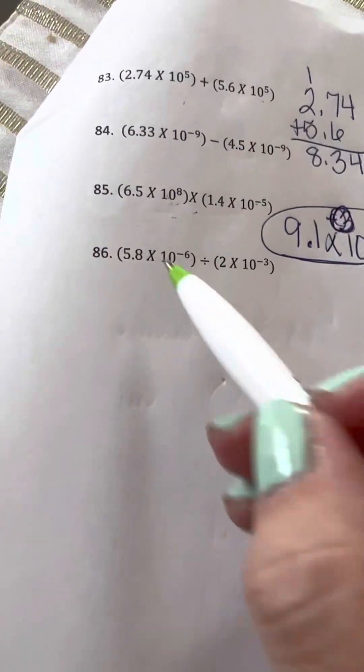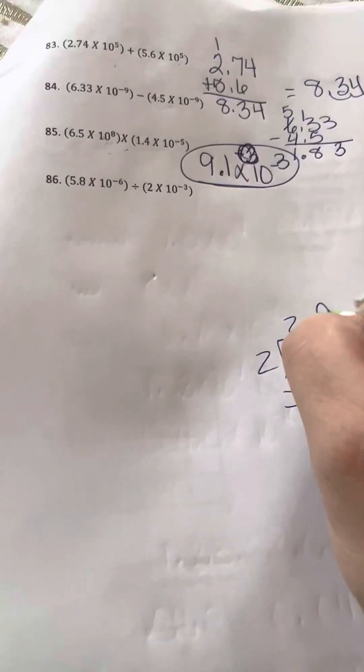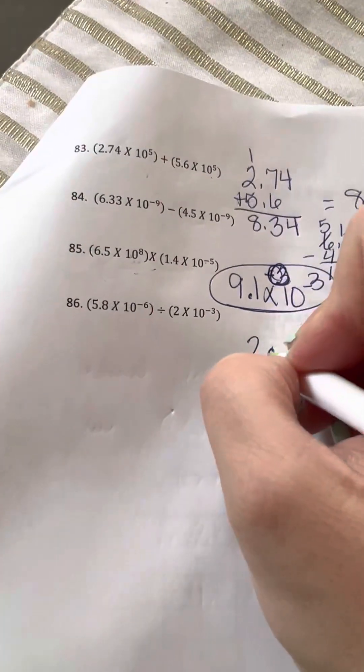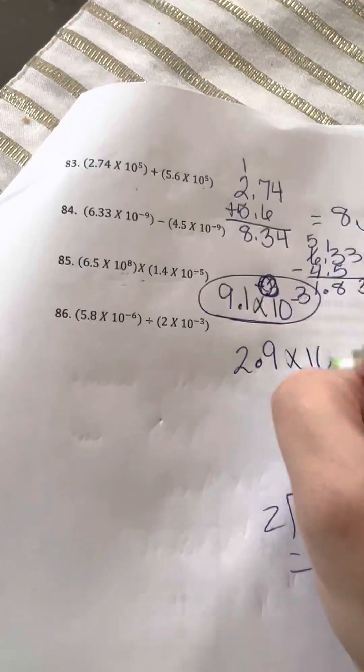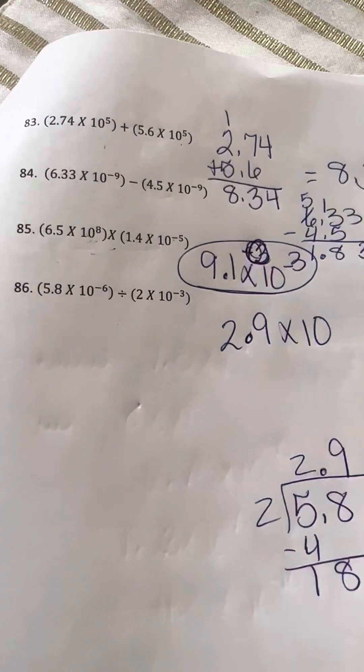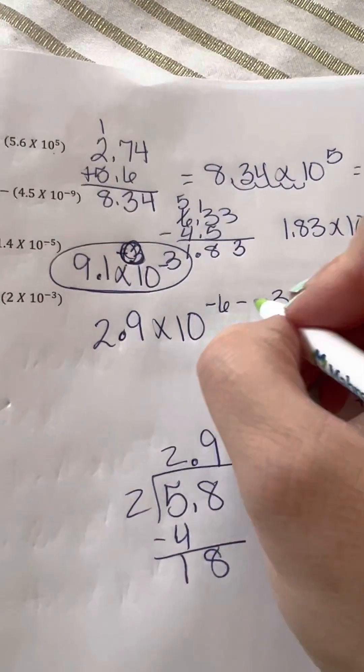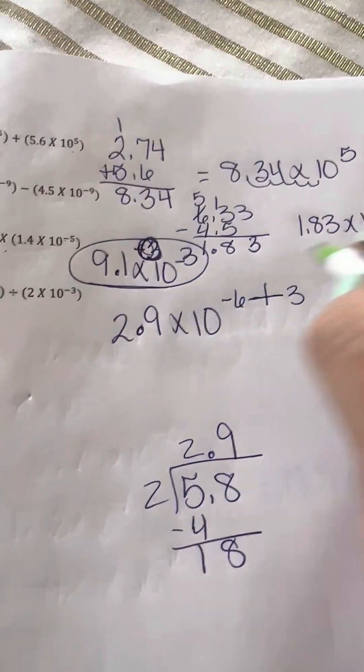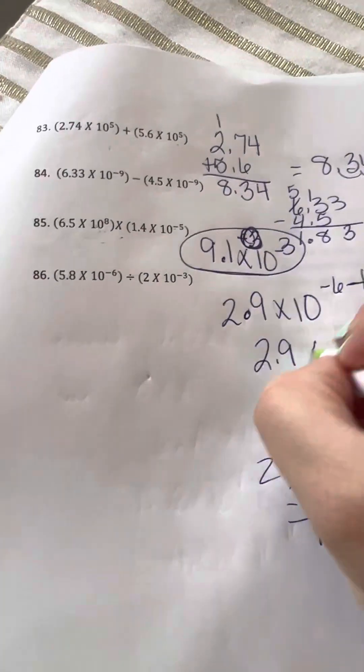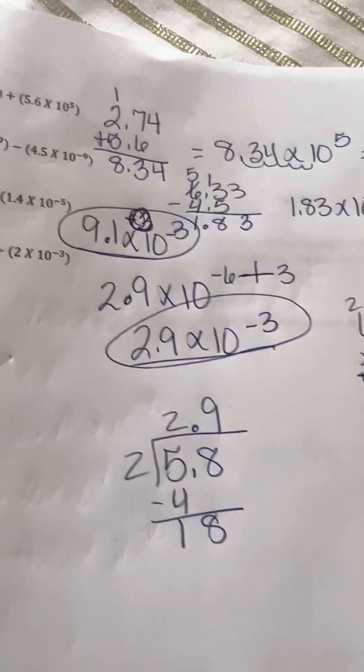And then here, 5.8 divided by 2. 2.9 times 10 to the negative 6 minus negative 3. So negative 6 minus negative 3. Those two wrongs make a right. So I end up with 2.9 times 10 to the negative 3. All right, perfect.